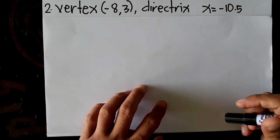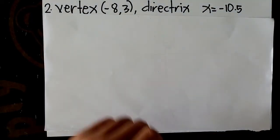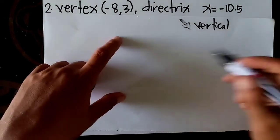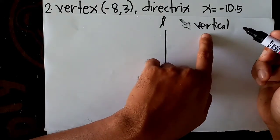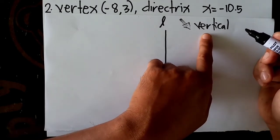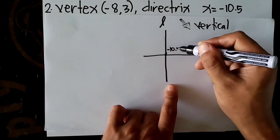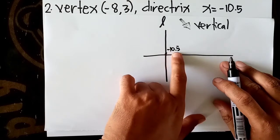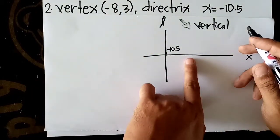Number 2: vertex (-8, 3), directrix x = -10.5. Since the directrix is a vertical line (x = ...), the parabola opens left or right. The directrix is at x = -10.5 and the vertex is at x = -8. Since -8 is to the right of -10.5, the parabola opens to the right.